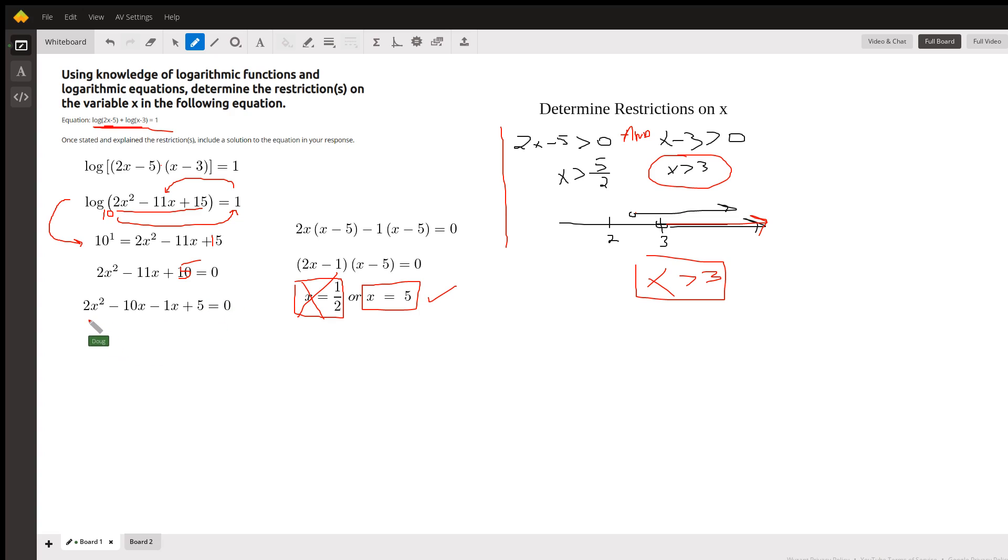And I can solve that by factoring, by using the quadratic formula, completing the square. I chose to solve by factoring, noticing that I can split the middle term into negative 10x minus 1x. And then use factoring by grouping to get this factorization of that polynomial equation, or quadratic equation. x equals 1 half or x equals 5.